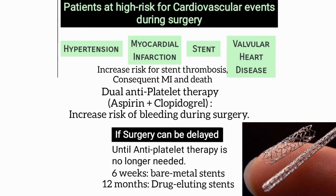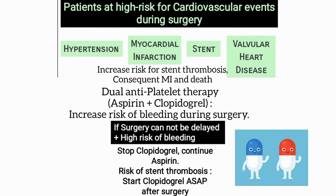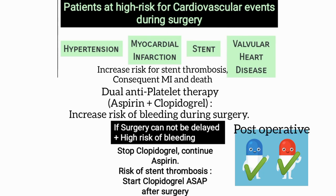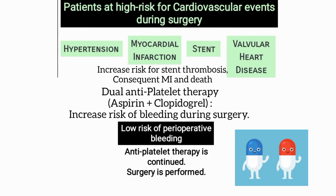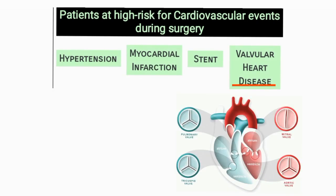If surgery is absolutely necessary and there is an increased risk of perioperative bleeding, stop clopidogrel and continue only aspirin, then perform the surgery. After surgery, start clopidogrel as soon as possible to minimize the risk of stent thrombosis. If there is low risk of perioperative bleeding, dual antiplatelet therapy can be continued and surgery can be performed.